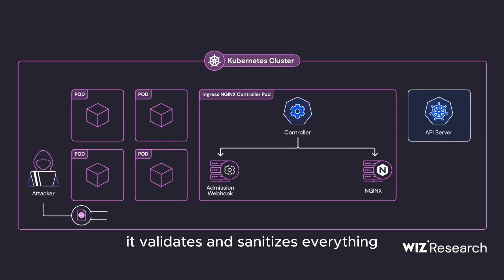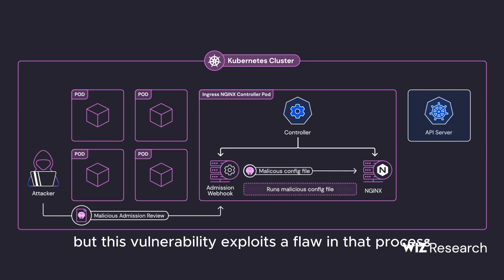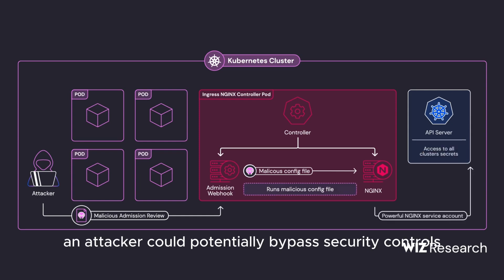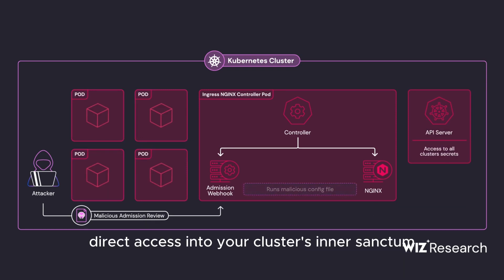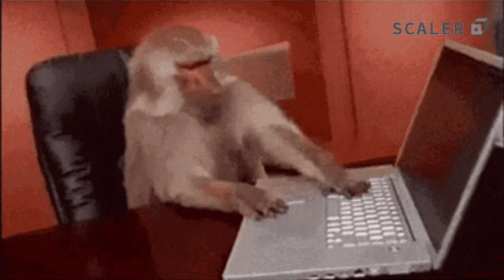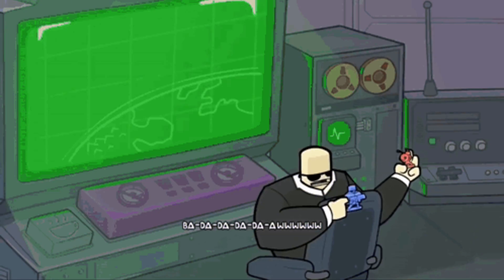Here's where the vulnerability comes in. Normally, when a request hits Ingress NGINX, it validates and sanitizes everything before passing it onto your applications. But this vulnerability exploits a flaw in that process. By manipulating request headers, an attacker could potentially bypass security controls and gain elevated privileges, or even direct access into your cluster's inner sanctum. It doesn't immediately give an attacker full control, but the ability to execute arbitrary code means access to all cluster secrets in the entire environment, which can easily lead to a full cluster takeover.